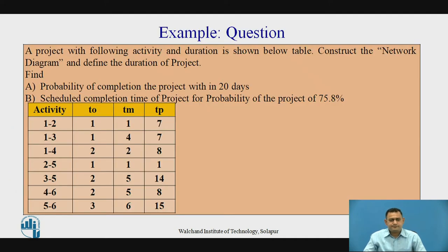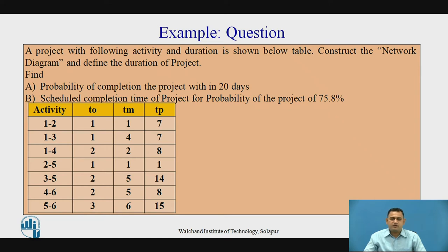Let's see the example. A project with the following activities has been mentioned in this table with three time estimates: optimistic time, most likely time, and pessimistic time. They have asked for the probability of completion of the project within 20 days, and also the scheduled completion time of the project for a probability of 75.8 percent.